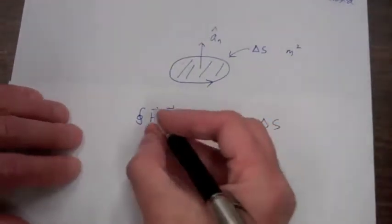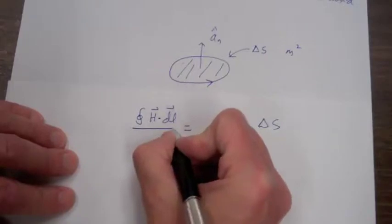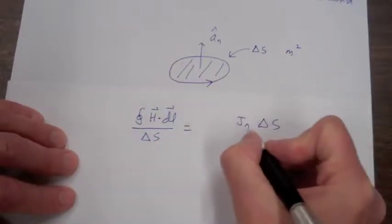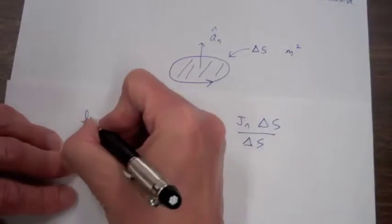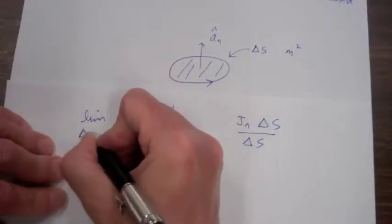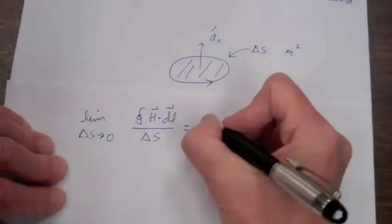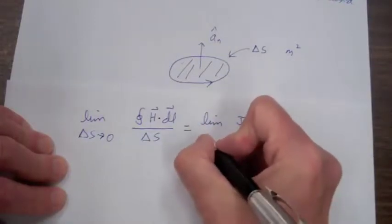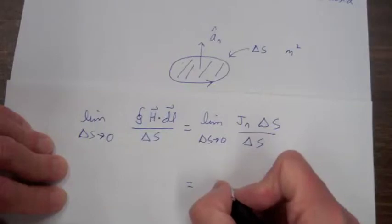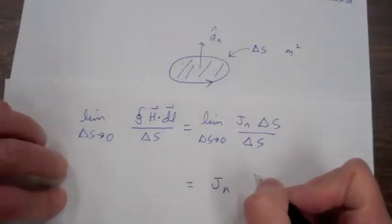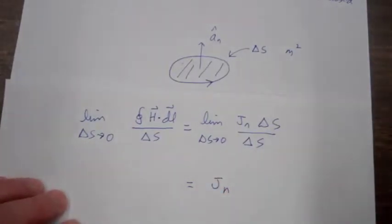So now let's divide both sides of this equation by delta S and take the limit as delta S goes to zero.